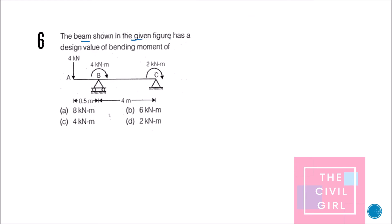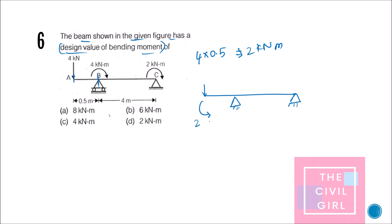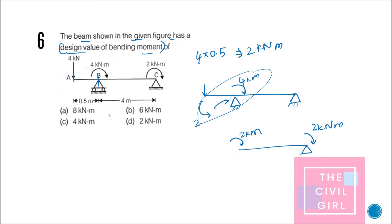Next question: the beam shown has a design value bending moment of what? It is very simple — find the bending moment caused by the overhanging part: 4 kN × 0.5 m = 2 kN·m. This load causes a moment here, and the net moment at this point is 2 kN·m clockwise. We also have 2 kN·m on the other side, so they are equal. The answer is option D.